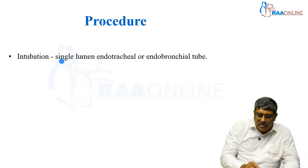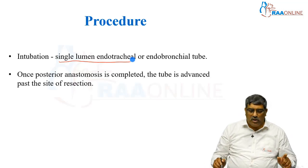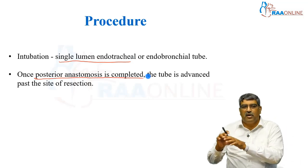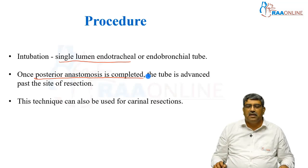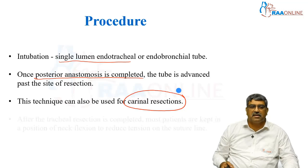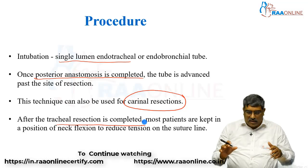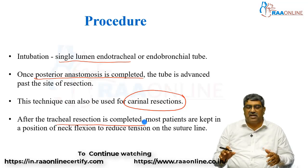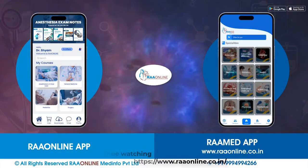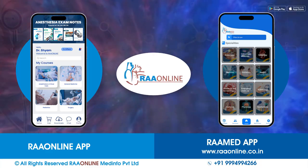The intubation can be with a single lumen endotracheal tube or an endobronchial tube. Once the posterior anastomosis is completed, the tube is advanced past the site of resection. The technique can also be used for carinal resection. After tracheal resection is completed, most patients are kept in a position of maximum flexion to reduce the tension on the suture line.